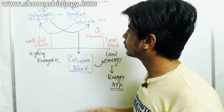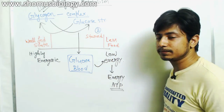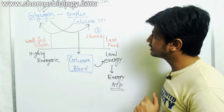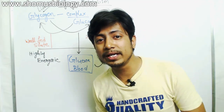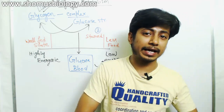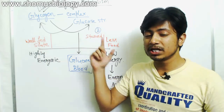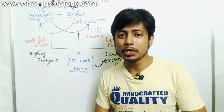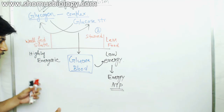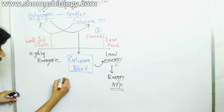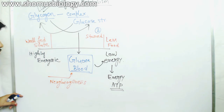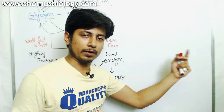Another important process occurs in the starved state: when there is not much glucose available, it's very important to produce glucose from any available source. We can also produce glucose by going backwards from pyruvate, which is part of the glycolytic pathway — reversing glycolysis from pyruvate to produce glucose. This process is known as gluconeogenesis, which also plays an important role in providing glucose molecules for use.